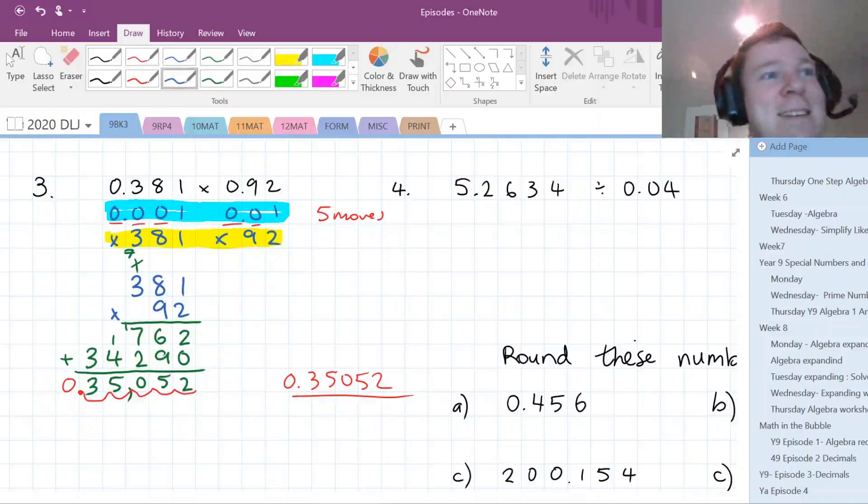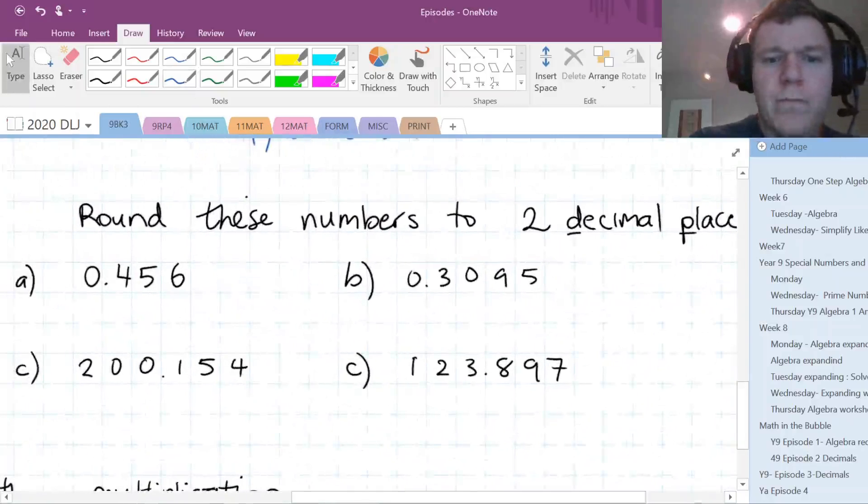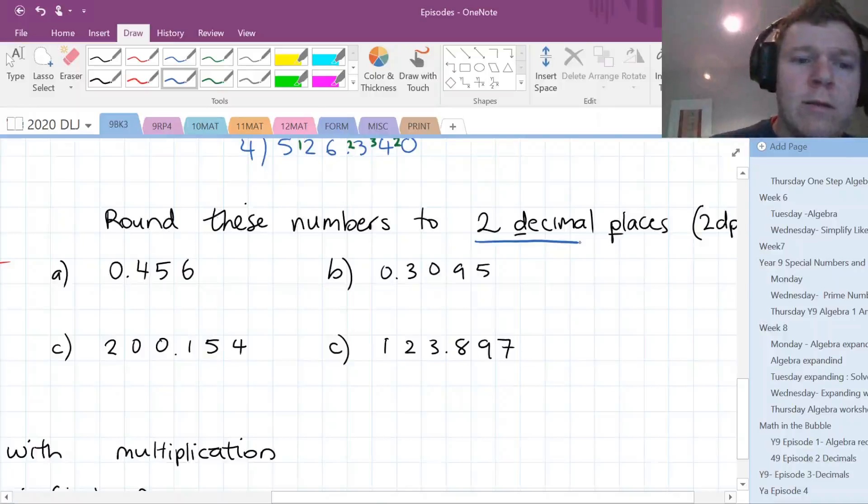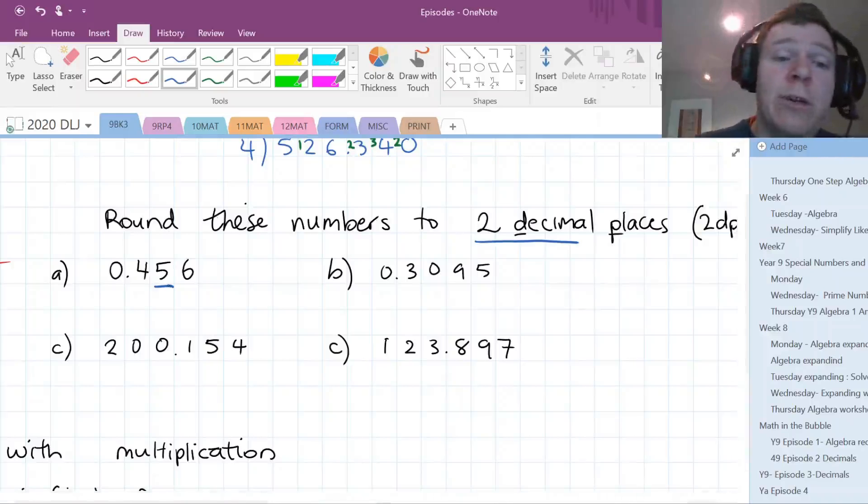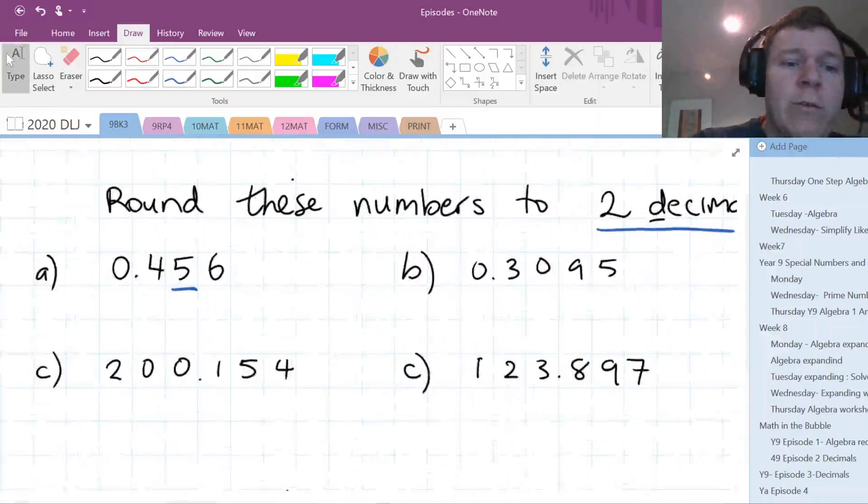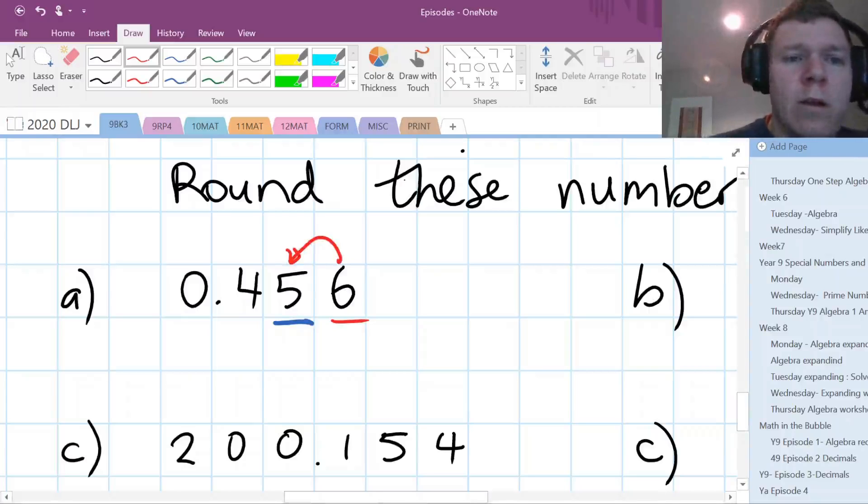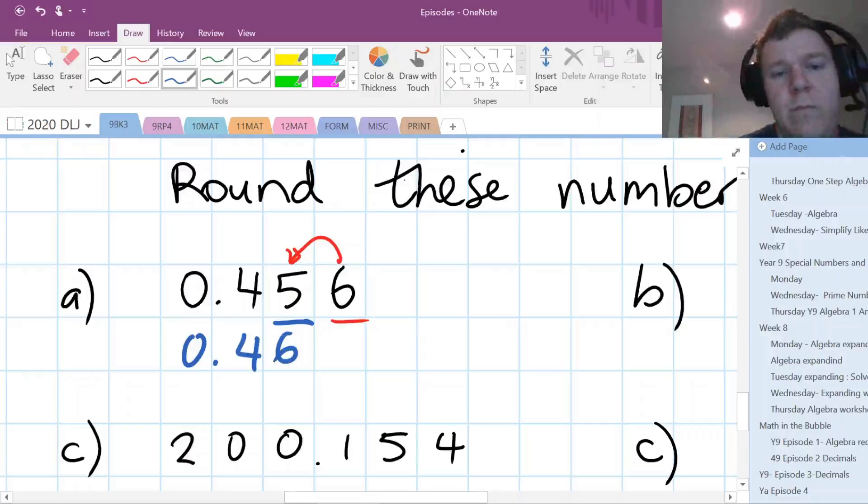Number four. When we're rounding to two decimal places, we are only really concerned about the second decimal place. Actually we're concerned about the next one over, because that is whether it rounds up or not. The number that comes after the second decimal place, is it bigger than a five? It is, so it's gonna round our number up. So our final answer for this one is zero point four six.